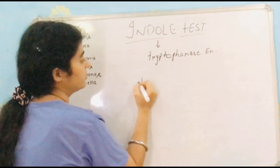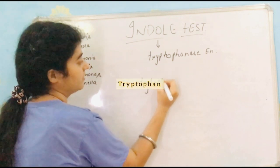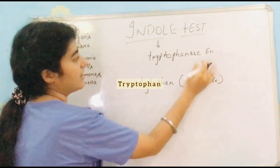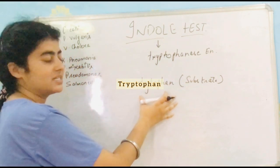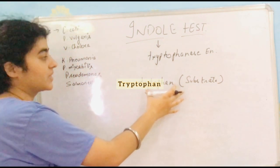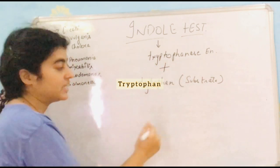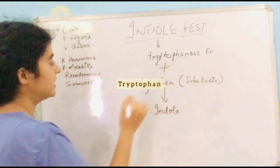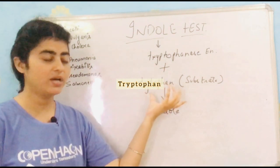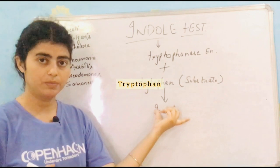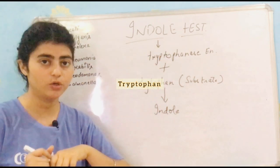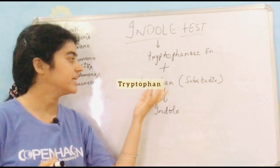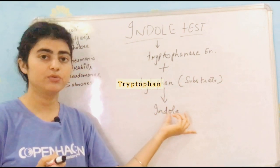The substrate used here is tryptophan, which is an amino acid. When this enzyme and substrate react, there is production of indole. Tryptophanase enzyme degrades the amino acid tryptophan into indole. That is the basic principle of the indole test.